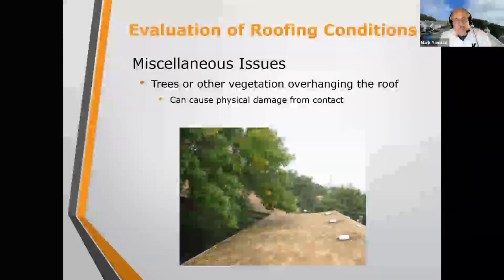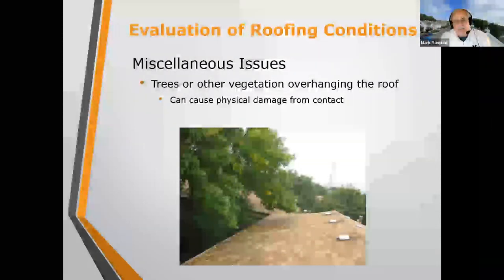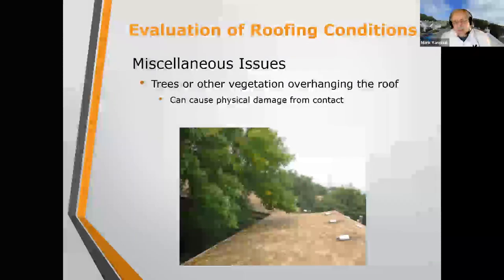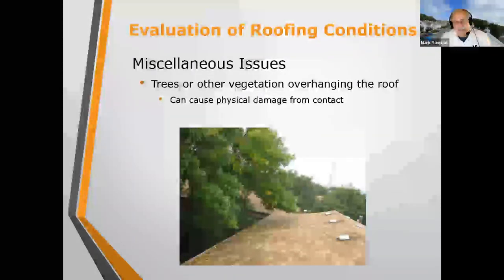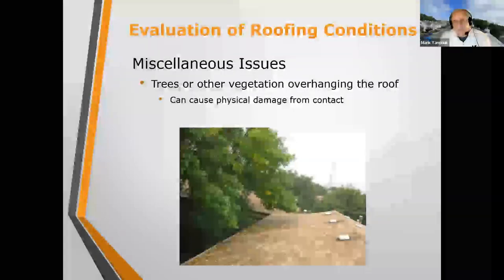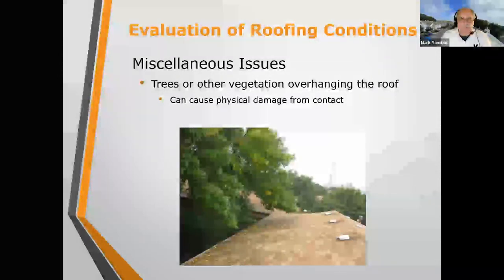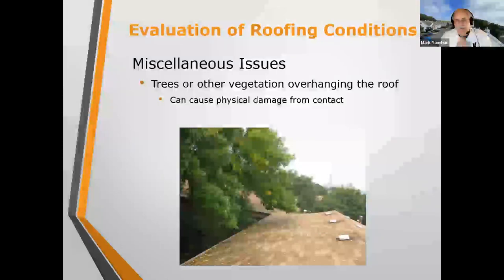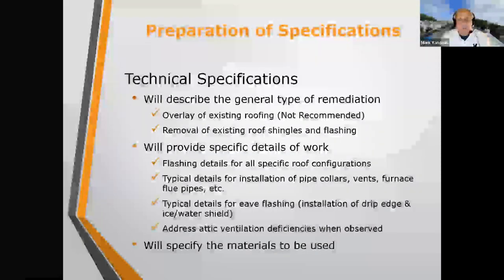Miscellaneous issues: trees overhanging roofs — or actually laying on top of roofs — will cause damage. Especially if you have a tree on a roof and then get a thunderstorm, it could damage the shingles.